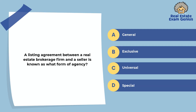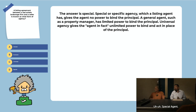A listing agreement between a real estate brokerage firm and a seller is known as what form of agency? General, exclusive, universal, or special. The answer is special. Special or specific agency, which a listing agent has, gives the agent no power to bind the principal. A general agent, such as a property manager, has limited power to bind the principal. Universal agency gives the agent unlimited power to bind and act in place of the principal.